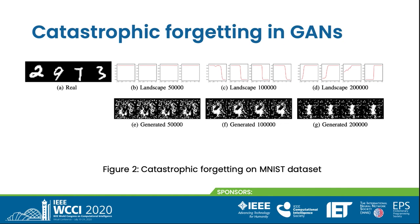A similar phenomenon is observed on the MNIST dataset. Figures 2b to 2d show the landscape of the discriminator output around real data points in Figure 2a. To get the landscape around real data points, we plot the score of data points along a random line through the real data points, setting the range from minus 100 to 100. As shown in Figure 2c, at iteration 100,000, the score monotonically decreased from left to right, while at iteration 200,000, the score monotonically increased from left to right. This is similar to the change of the vector field in Figure 1.